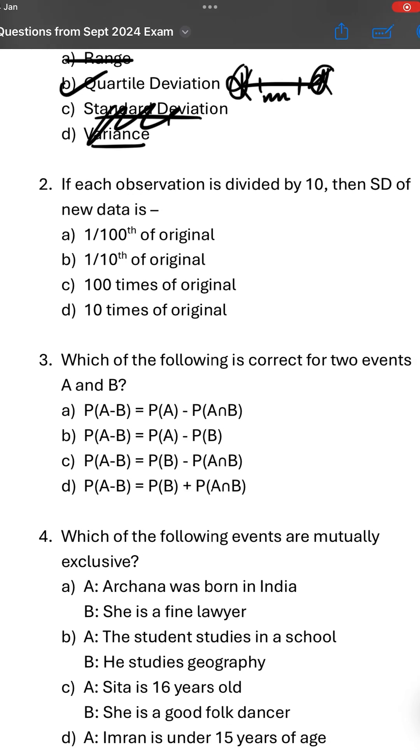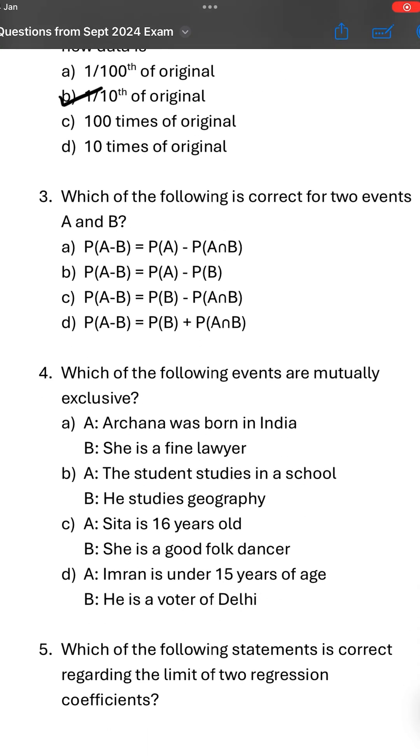If each observation is divided by 10, then SD of new data is? SD, MD, QD - all measures of dispersion are affected by positive value of change of scale. So if data is divided by 10, SD will also be divided by 10. Option D.